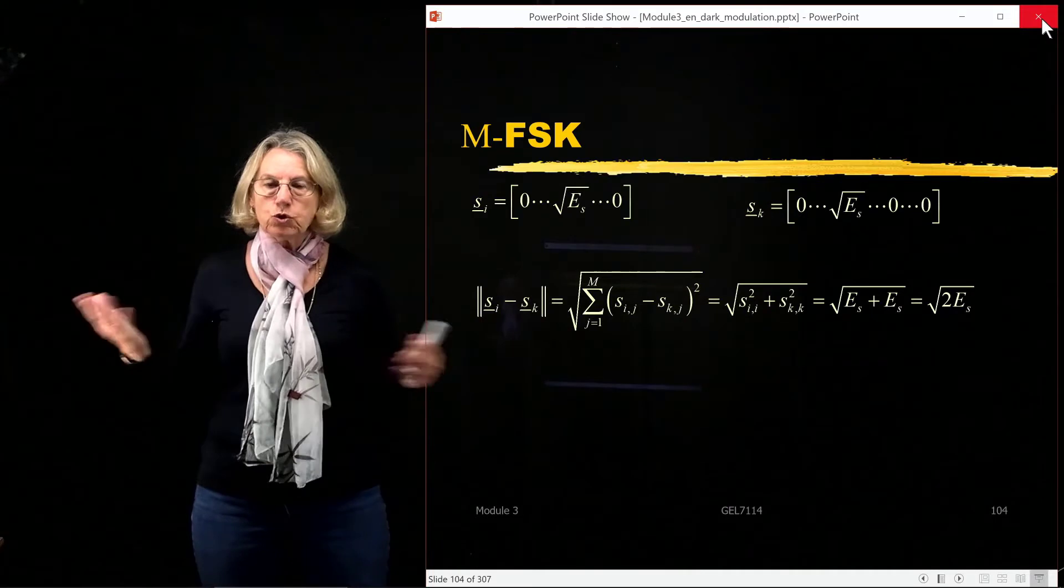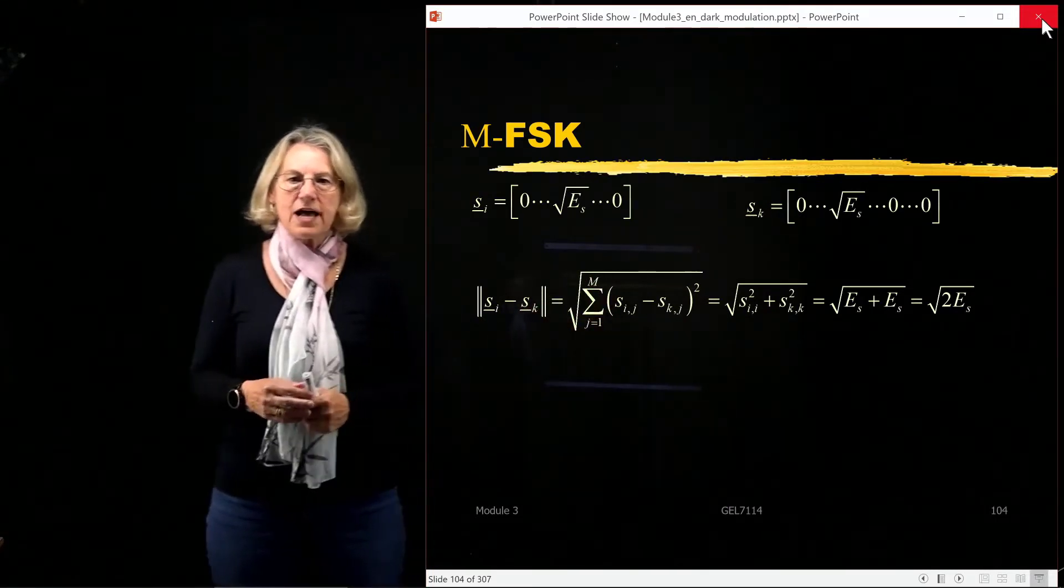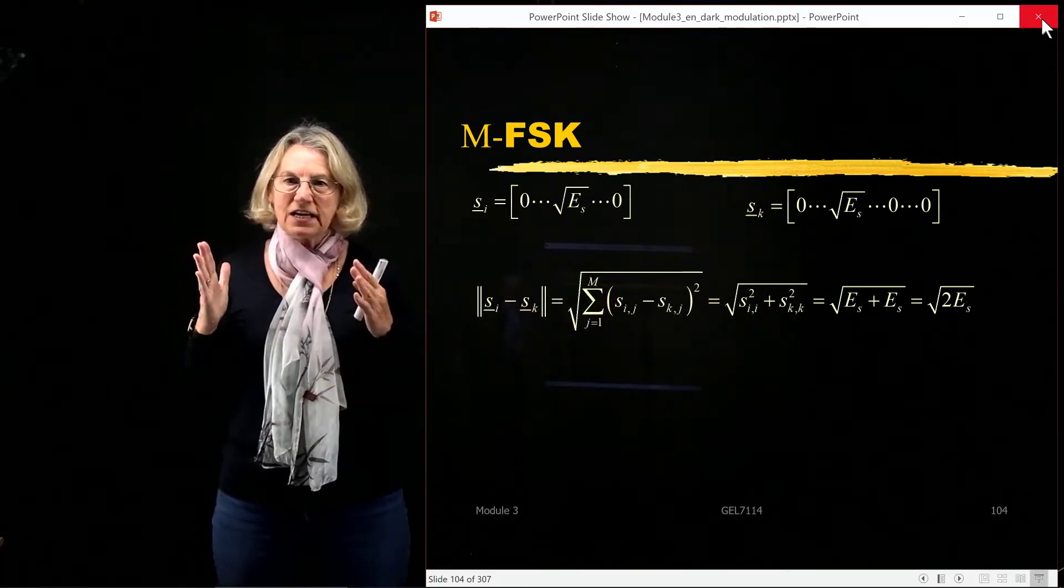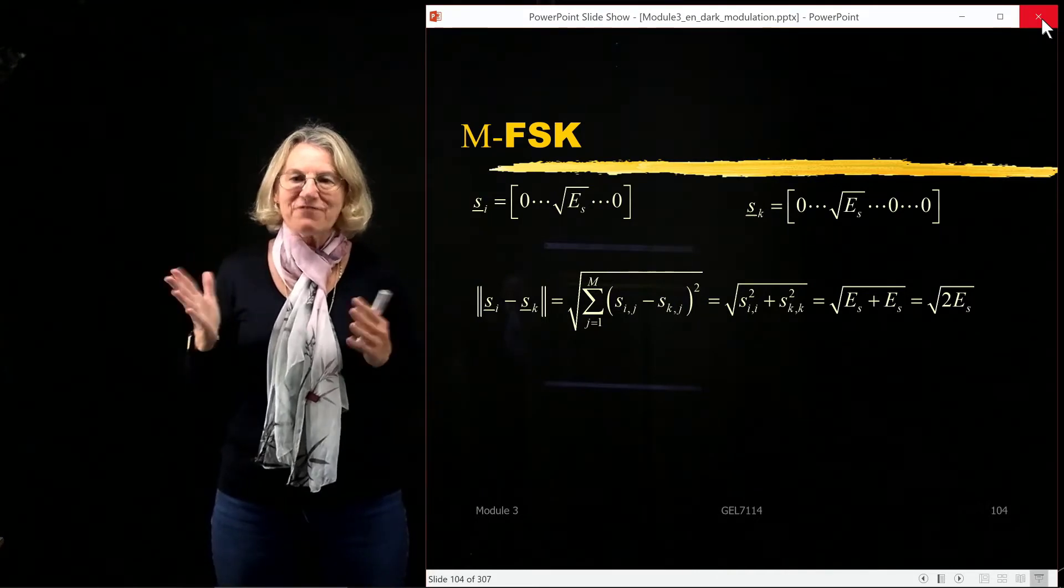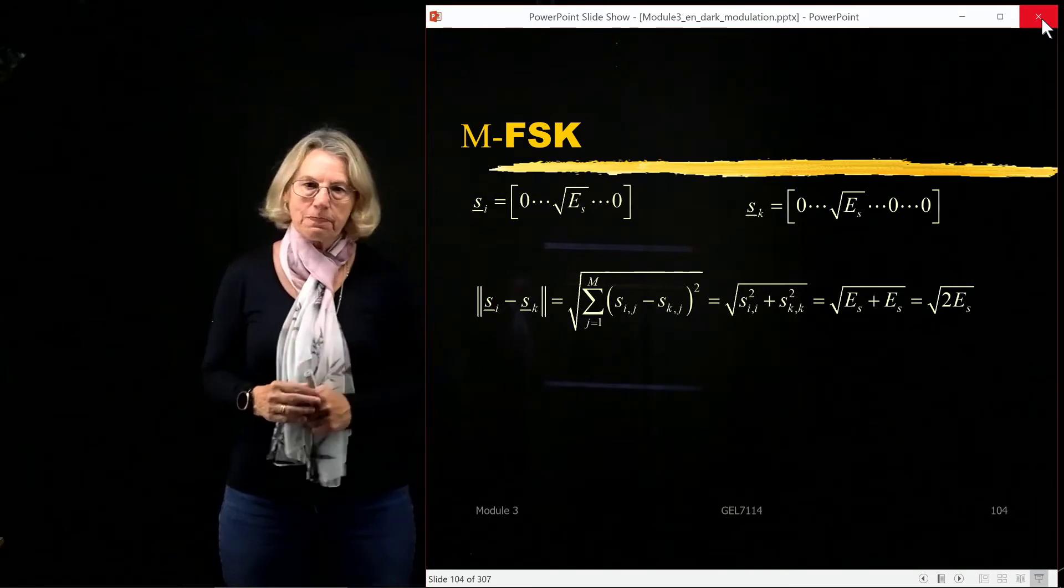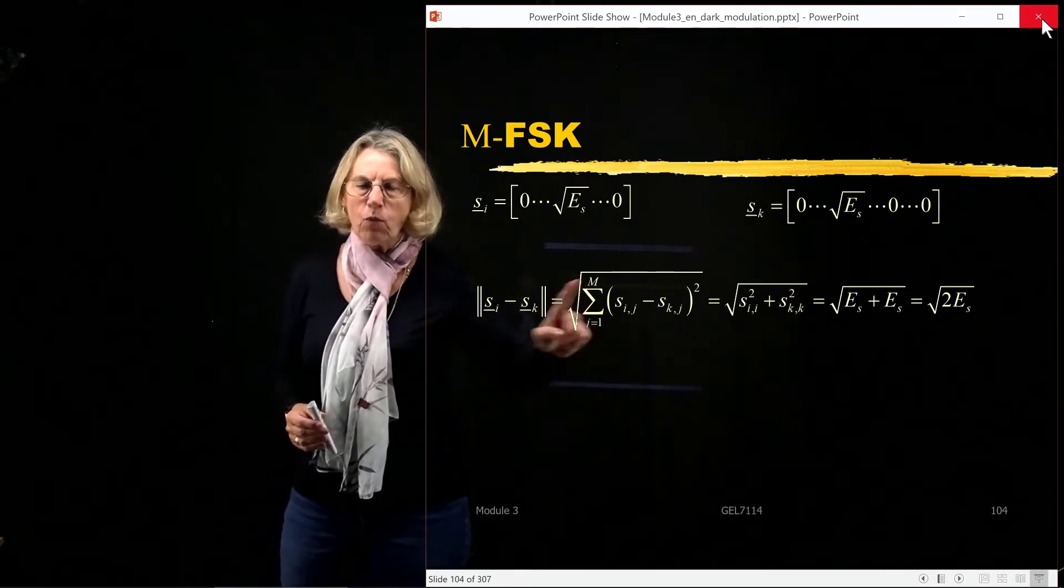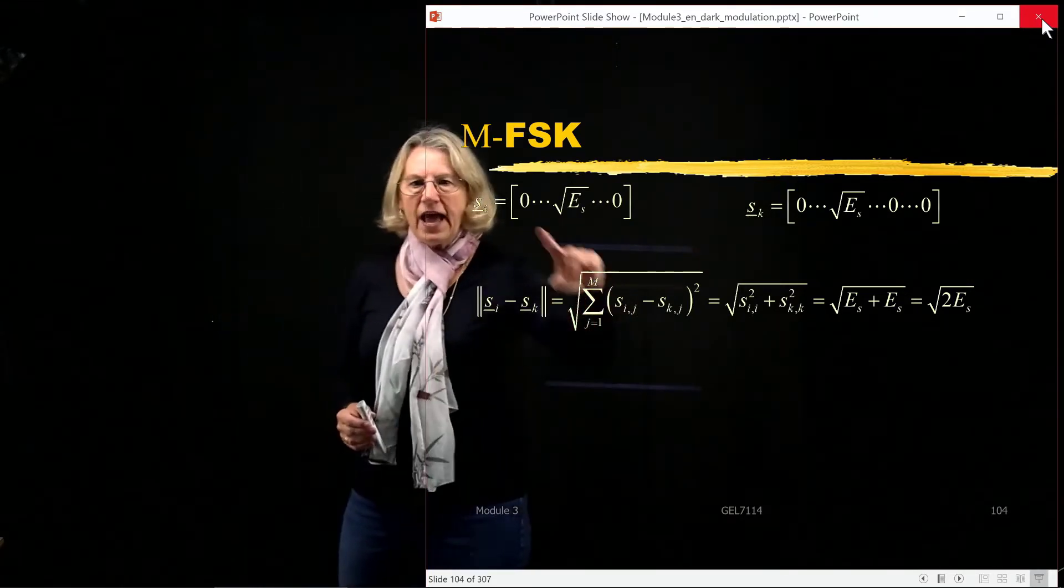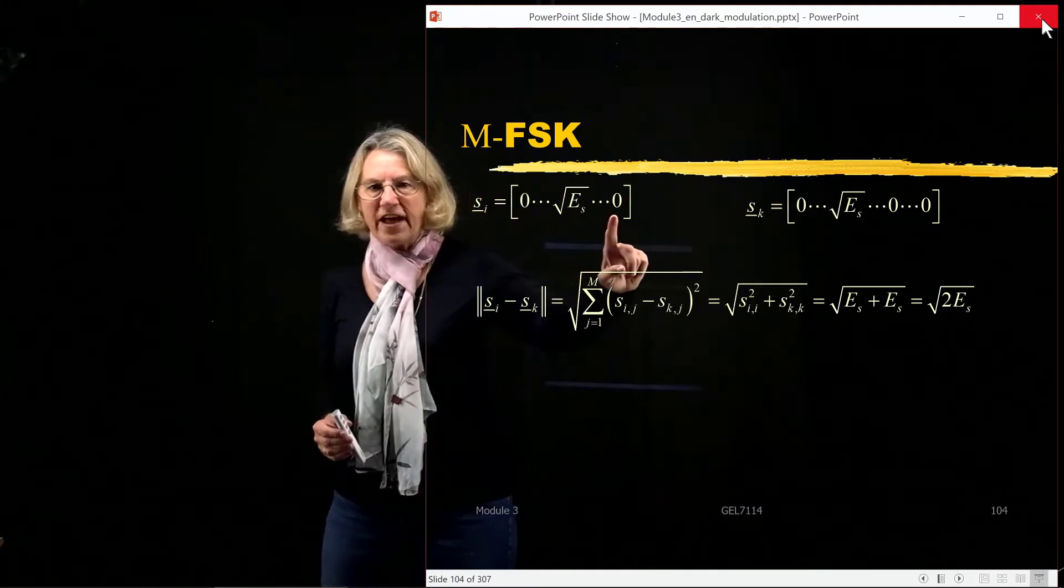is the square root of the sum of the difference in the coefficient squared for each one of the coefficients in the vector. So this is a sum over j equal 1 to m. And here we have the elements of this vector.